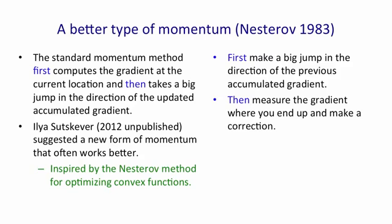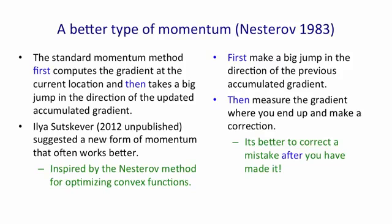One way of thinking about what's going on is, in the standard momentum method, you add in the current gradient, and then you gamble on this big jump. In the Nesterov method, you use your previous accumulated gradient, you make the big jump, and then you correct yourself at the place you've got to.